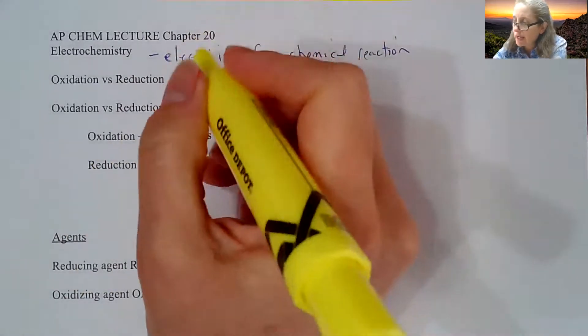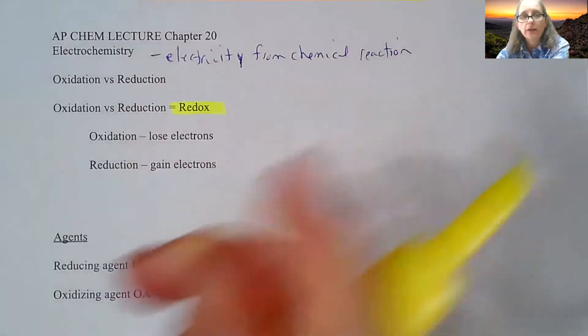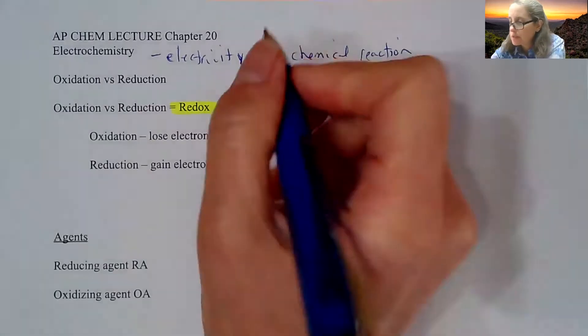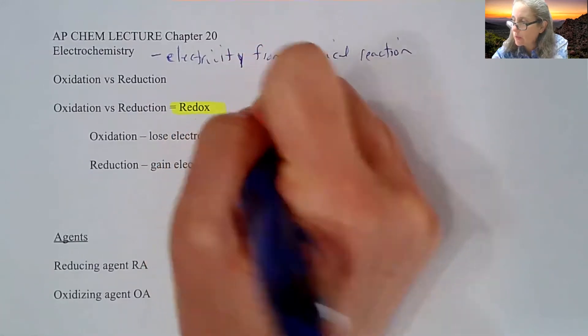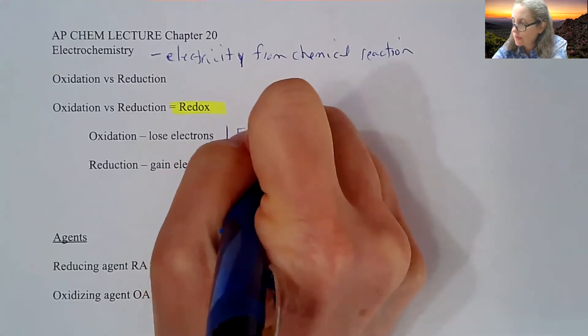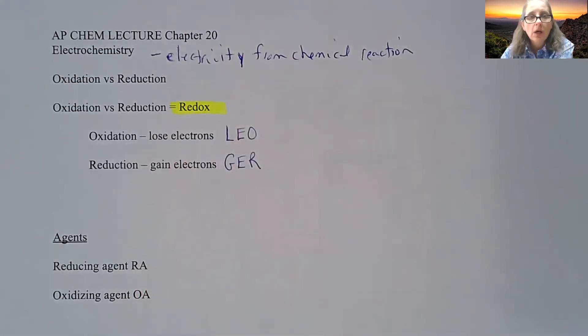Oxidation and reduction, we usually call it a redox reaction because you need one with the other. Somebody's going to lose electrons—that is oxidation, and remember it is LEO. Reduction is gain of electrons—that is GER. So LEO the lion goes GER is a way to remember. Oxidation is loss, reduction is gain, or you could remember OIL RIG: oxidation is loss, reduction is gain.